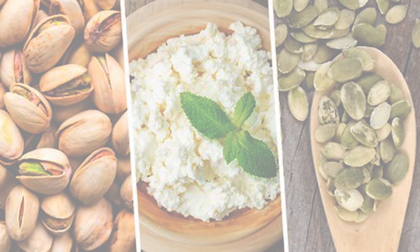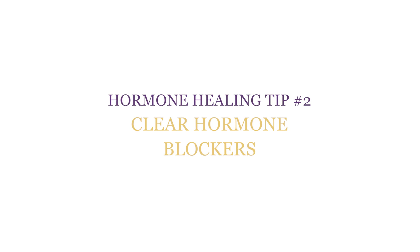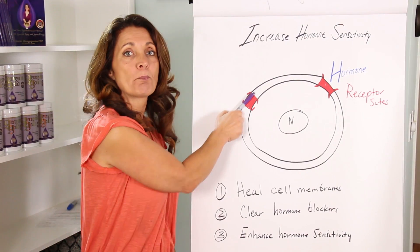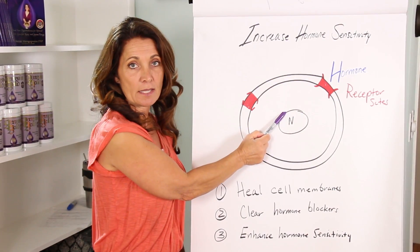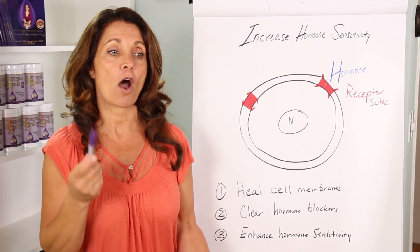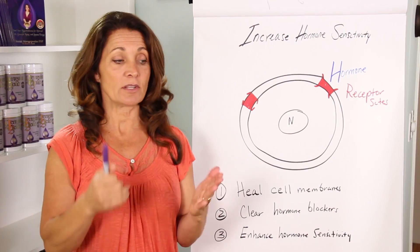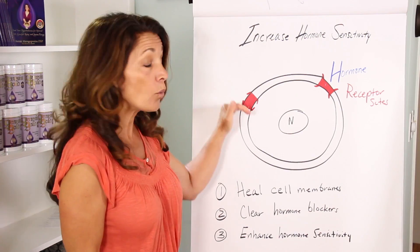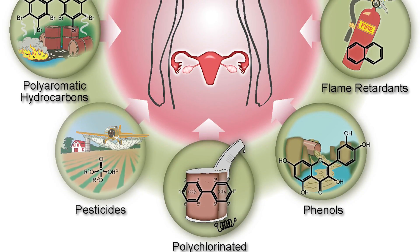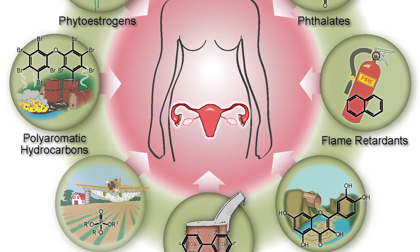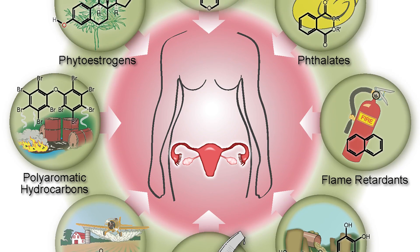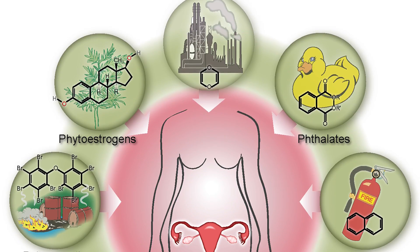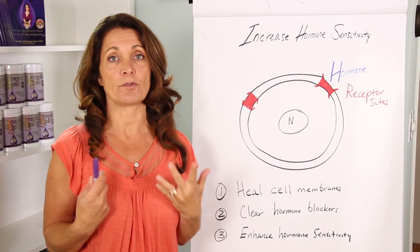Healthy cell membranes are where you make receptor sites. Number two, your receptor sites actually have to be cleared of hormone blockers. Certain things will actually block your receptor site from allowing the hormone to get in. The most classic hormone blockers are chemicals that actually sit on top of that receptor site and take up the receptor site so that the hormone can't get in. Typically those will be xenoestrogens. They'll be things like the BPA in plastics, the xenoestrogens in DDT. Anything that's called an endocrine disruptor actually blocks the hormone receptors, so your hormones can't do their job properly.